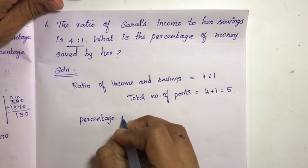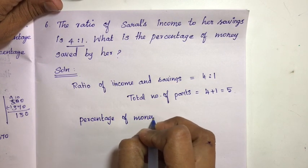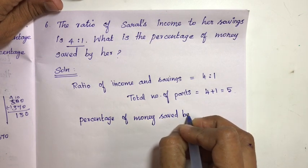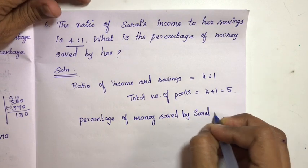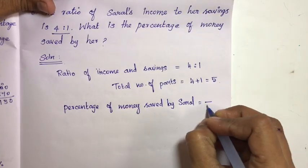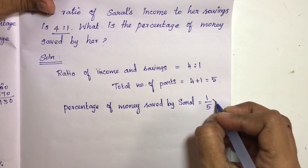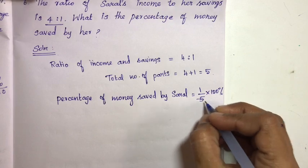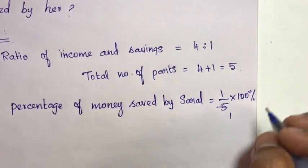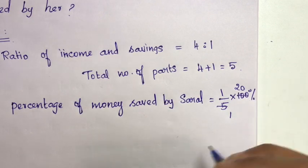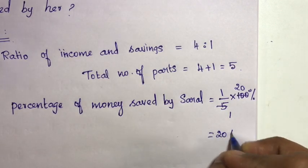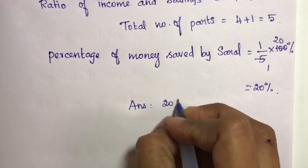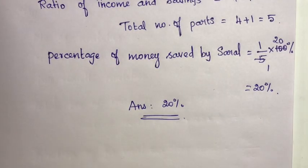Percentage of money saved by Saral is equal to 1/5 multiplied by 100. 1 five is 5, 2 fives are 10. So the answer is 20 percentage. Saral saves 20 percentage.